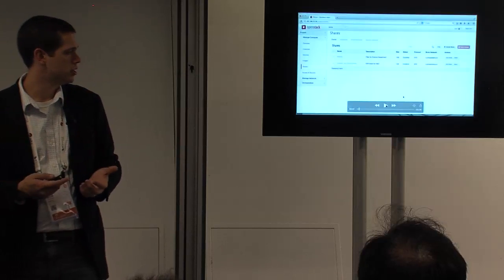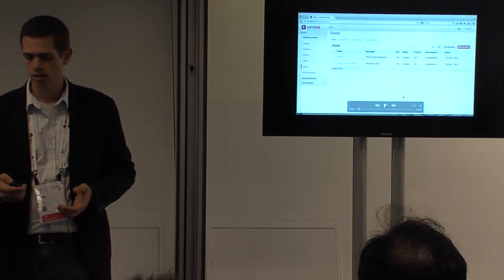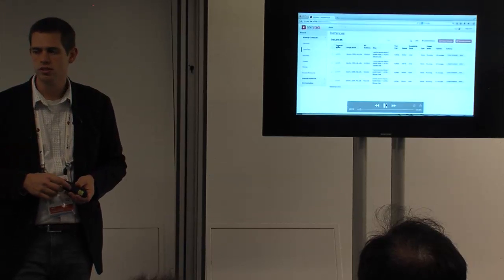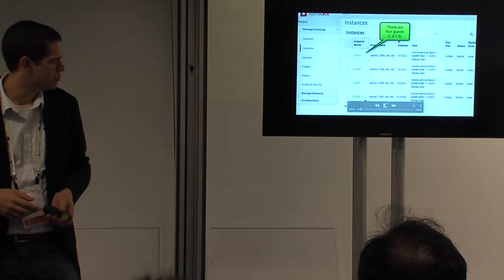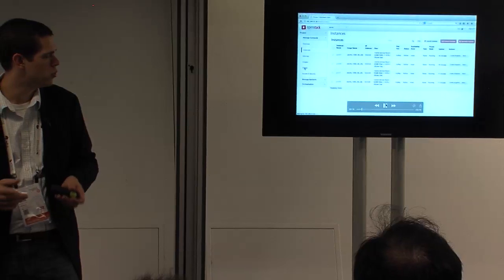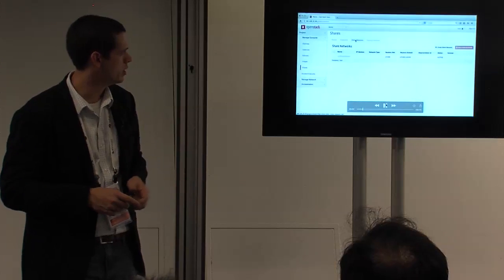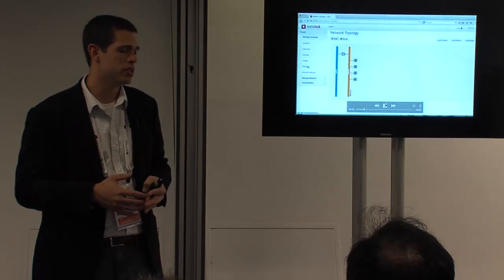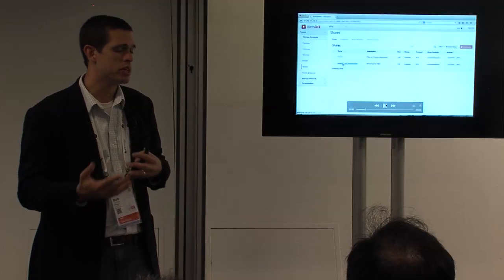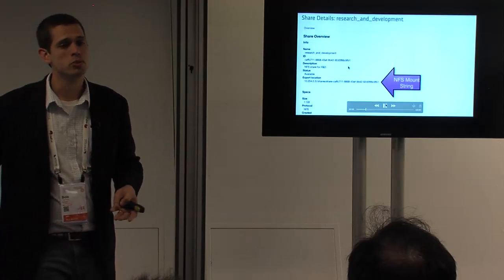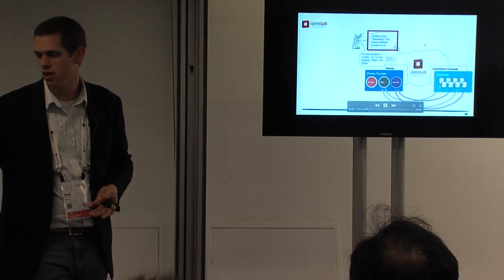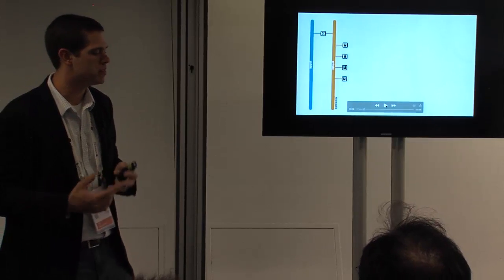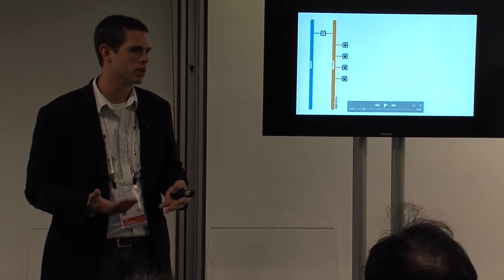In the demo we'll provision a new share and then go into a couple of existing Nova instances and add access to those. There are already two shares there. We'll look at the list of instances — there are four Ubuntu instances named one, six, seven, and eight. We'll look at Share Networks, which is a concept that associates the actual network topology that a tenant of OpenStack has defined. You need to make sure that when you provision a shared file system it's accessible over that Neutron-specific network.